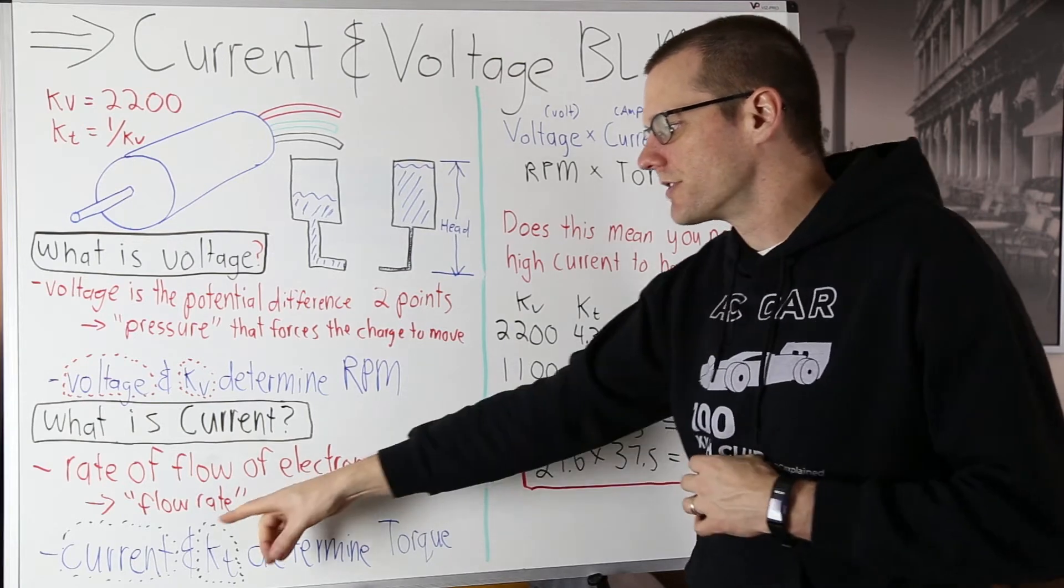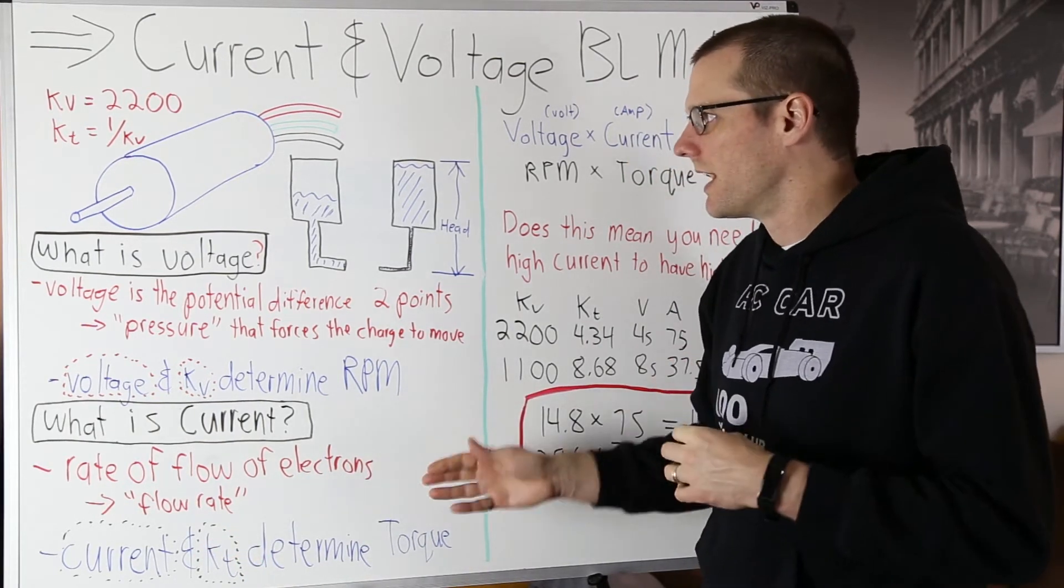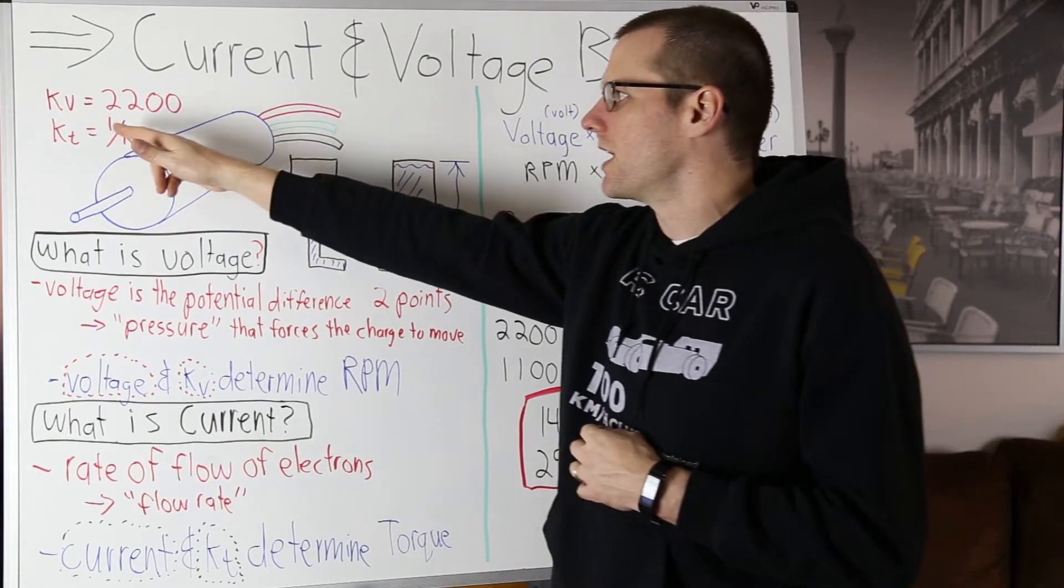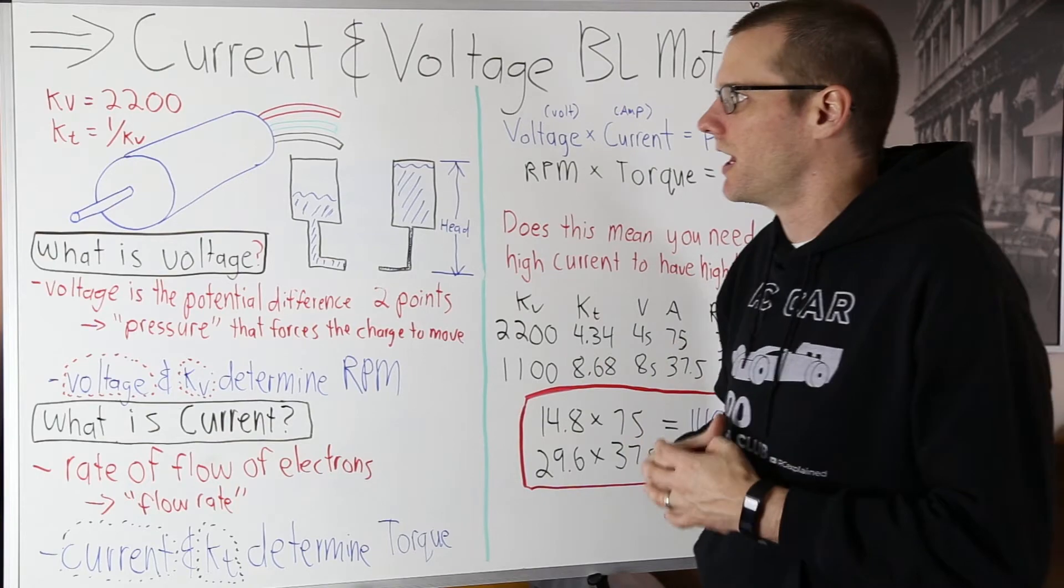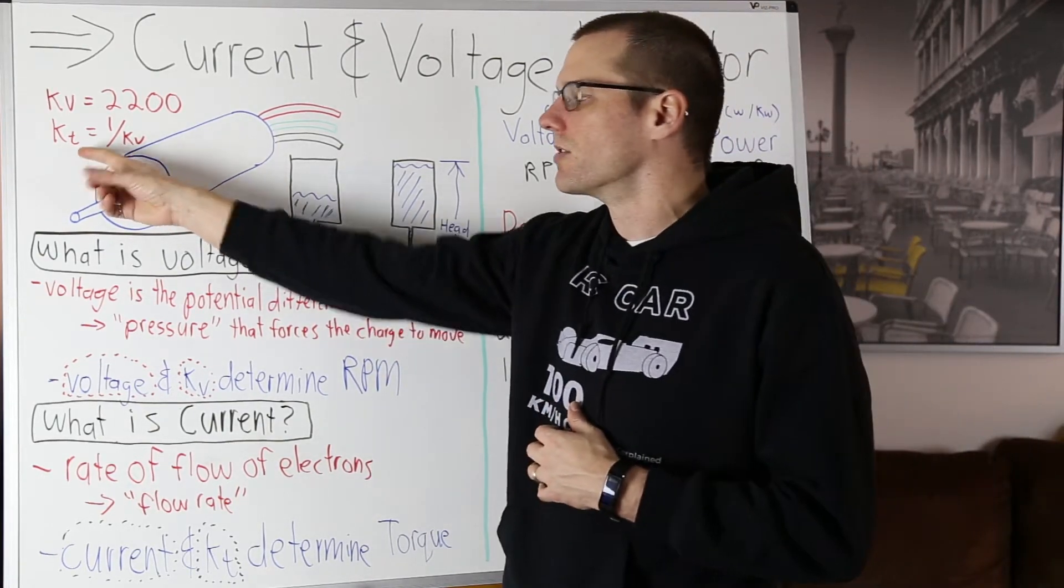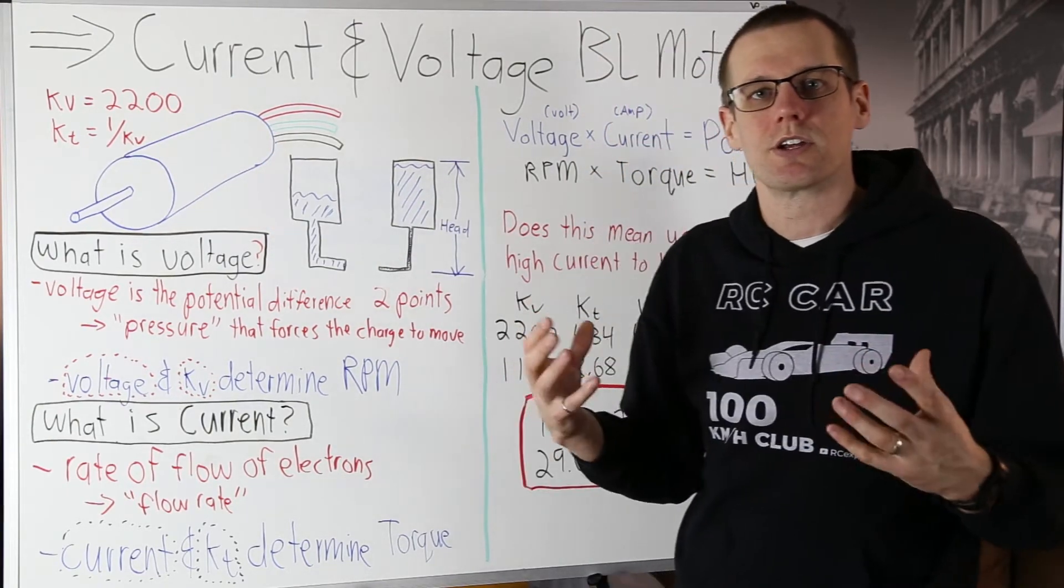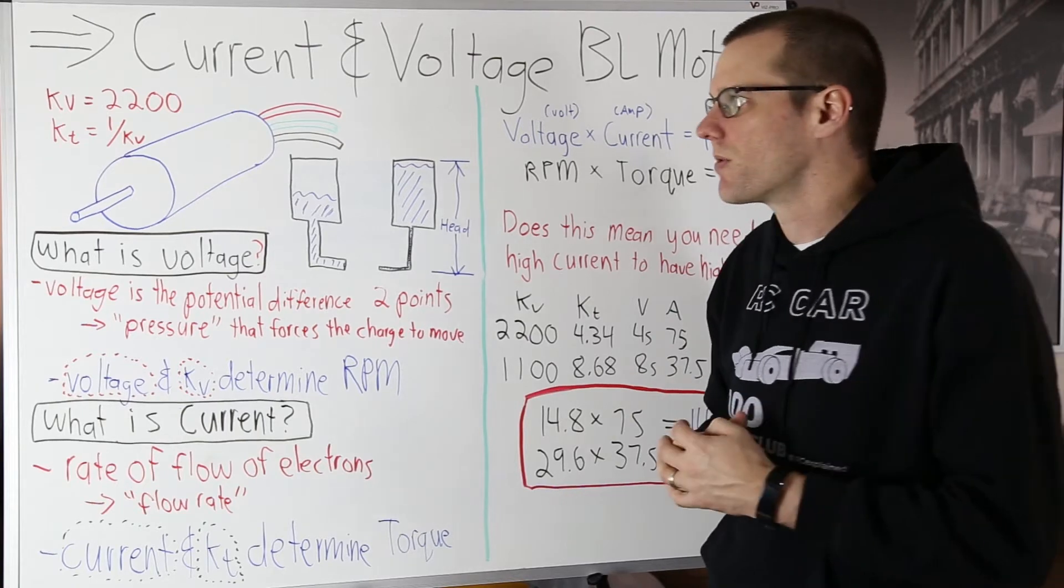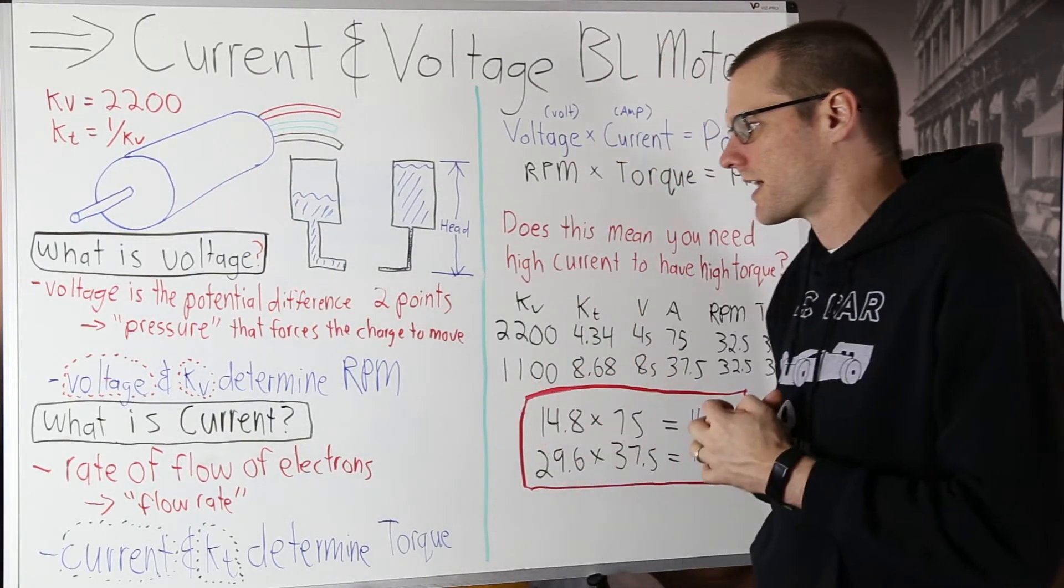What we can relate current within our brushless motor is directly related to our torque output of the motor. Now the way that that works is you have to combine current as well as the kT value of your motor. kT comes directly from your kV constant where kT is equal to 1 over your kV value. Now what's important to note here is that that kT value in SI terms has to have the 2200 RPM per volt converted also to SI terms otherwise your calculation will not work out. Something to keep in mind if you're actually trying to make that calculation.